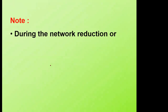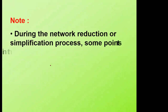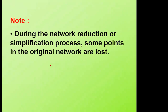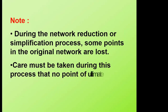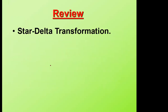Take note of this: during a network reduction or simplification process, some points in the original network are lost. If you are converting from star to delta, the star point or common point disappears. If you are converting from delta to star, you add a point. Care must be taken that no point of ultimate relevance is lost. If there is a point where you have to calculate a voltage or current, make sure you don't lose that point during simplification.